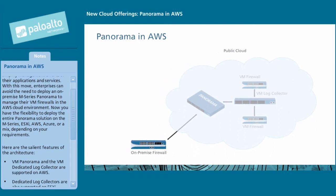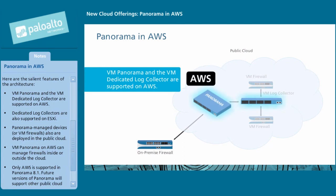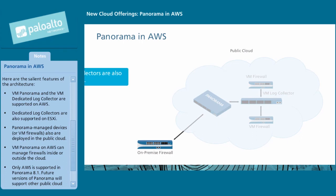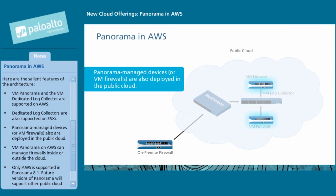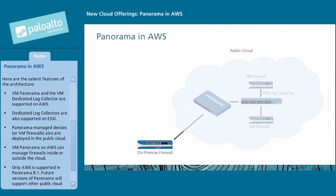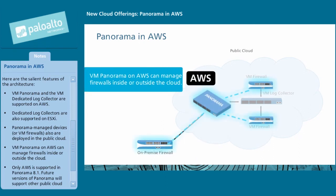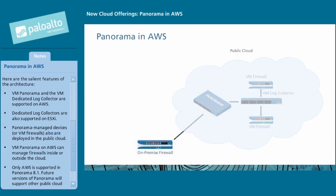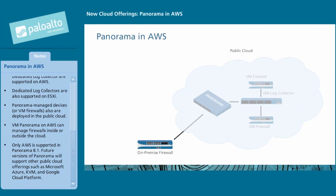Here are the salient features of the architecture. VM Panorama and the VM Dedicated Log Collector are supported on AWS. Dedicated Log Collectors are also supported on ESXi. Panorama Managed Devices, or VM Firewalls, are also deployed in the public cloud. VM Panorama on AWS can manage firewalls inside or outside the cloud. Only AWS is supported in Panorama 8.1, but future versions will support Microsoft Azure, KVM, and Google Cloud Platform.